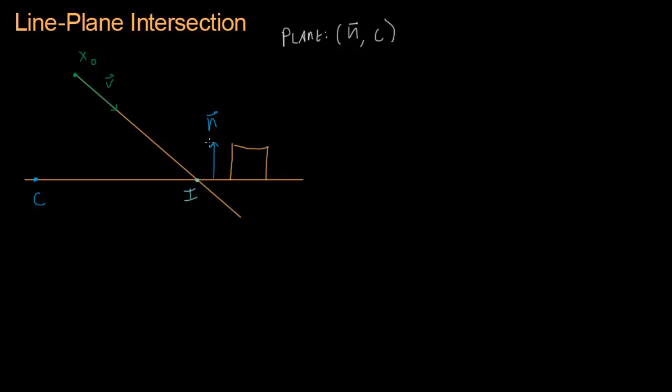I drew the normal off to the side here, but if I draw it right under my x-naught point, pointing directly up at the x-naught point, then I can start projecting vectors onto my normal.